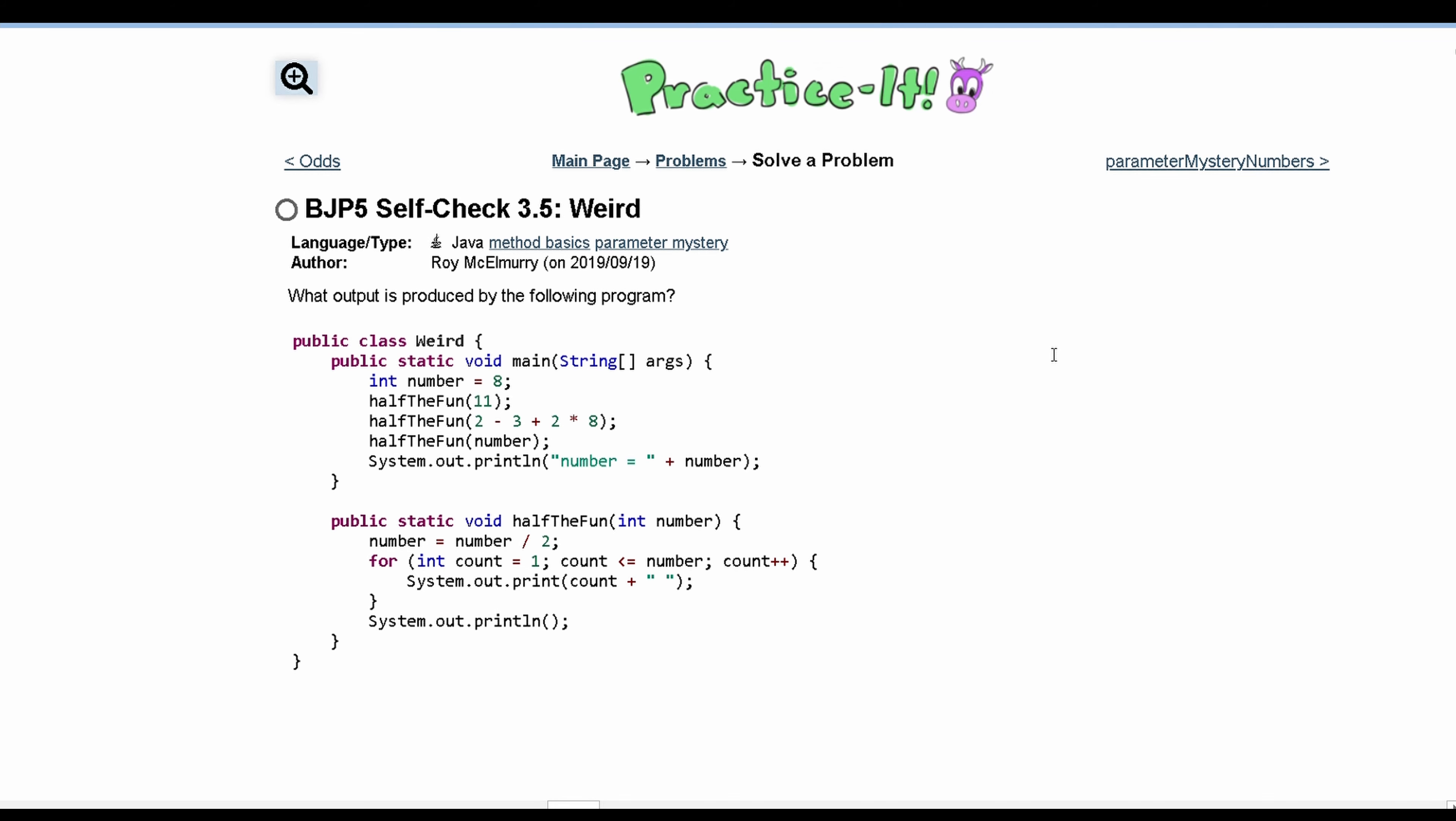For practice-it self-check 3.5, we're asked what is the output produced by the following program. When we look in here we have a class, we have a main method, and then we have another method that gets called in our main method.